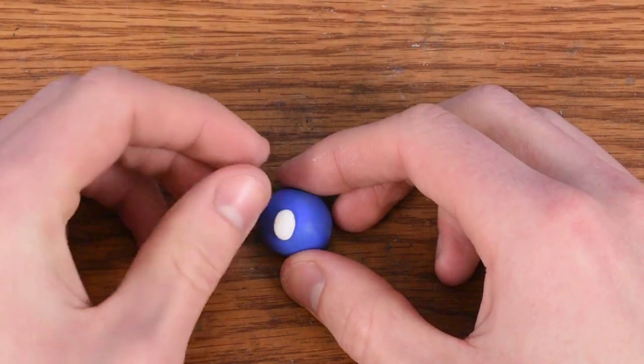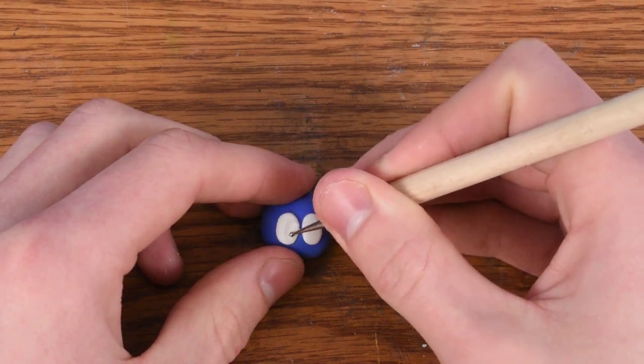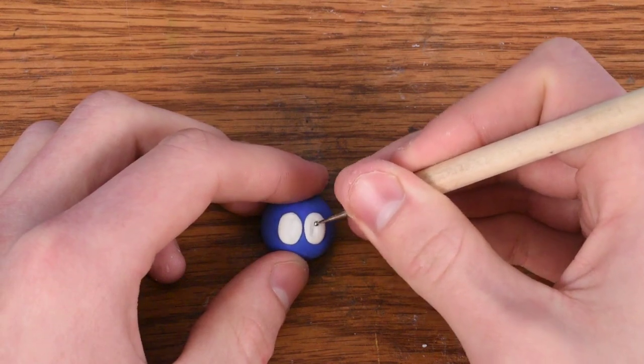So here we go creating the face. We need to dent out the inner part of the eyes and we'll use some black clay to fill in that.